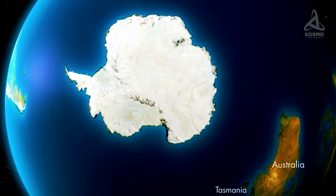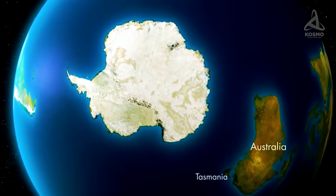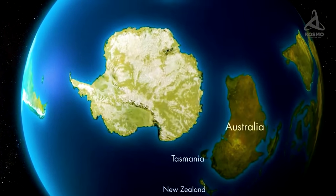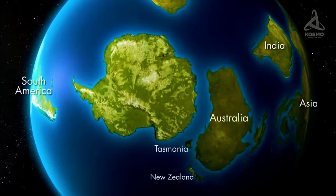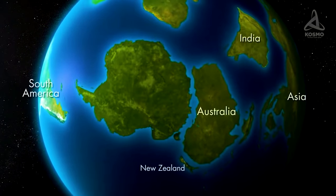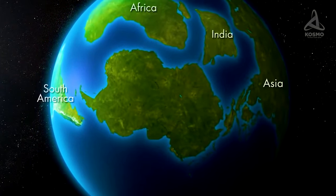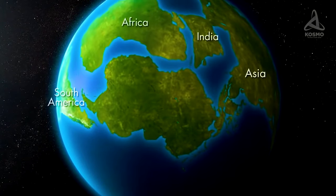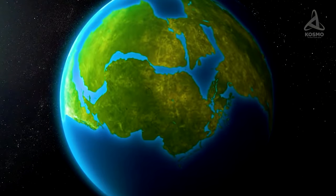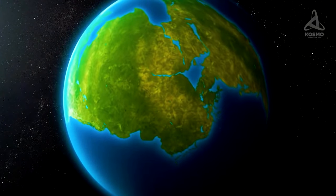It was comprised of today's Africa, South America, Antarctica, Australia, the Indian Peninsula and some other areas. The smaller continents of the day, Laurentia, Baltica and Siberia, were situated near the equator. Apart from all that, there was a great number of smaller islands.